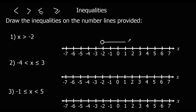So x can be anything this way. It can be minus 1, 0, 1, 2 — if it was an integer, it could be any of these numbers. It can be anything bigger than minus 2. So you just draw that with an arrow going in this direction.